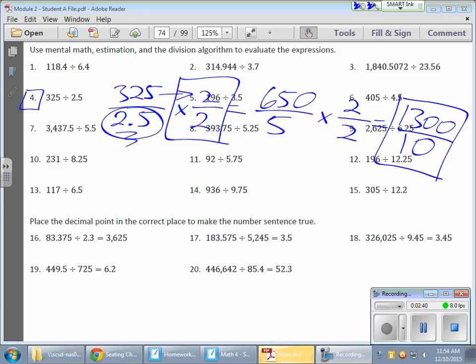Which is great, because check out this problem. I wind up with 1300 over 10, and that means I can divide by one place value. I wind up with 130 as a final answer, without ever really having to run a full algorithm.